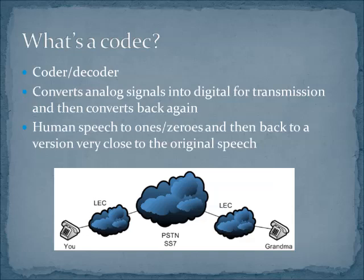So when you're calling grandma, you have to be able to convert and then decode again, or code and then decode. A codec is software and hardware that works toward this encoding of the audio or the video signal. And the codec can be located in the phone, it can be located in the PBX, or the switch itself.